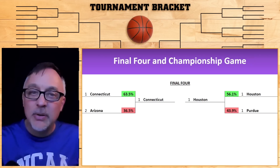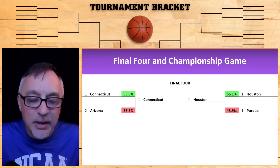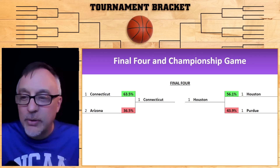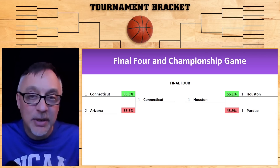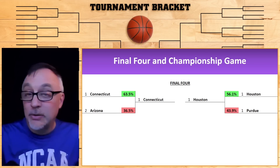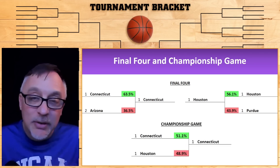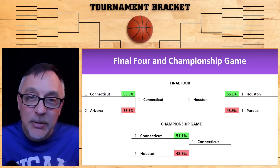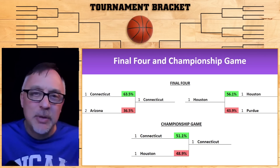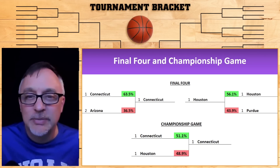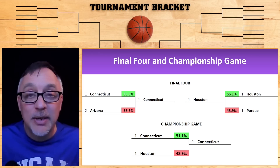So here are the final bracket picks using KenPom stats: Connecticut over Arizona, and Houston over Purdue. We all kind of expected it might come down to Connecticut and Houston in the end. And who's going to win? 51.1% to 48.9% — Connecticut barely squeaking by in a barn burner. Very close, tight game. Maybe won on a last-second bucket. I just made that up because the percentages are so close — I guess we'll find out.